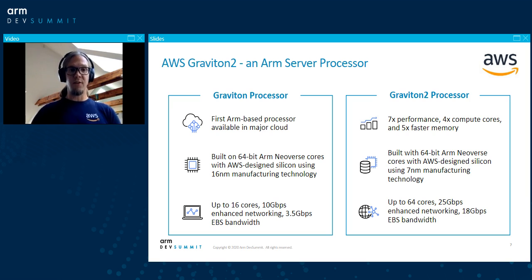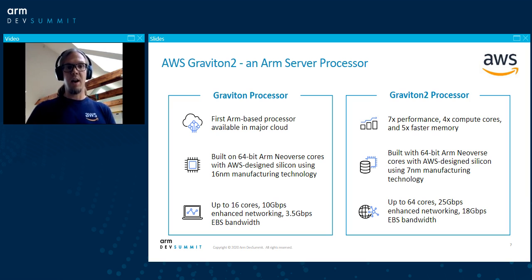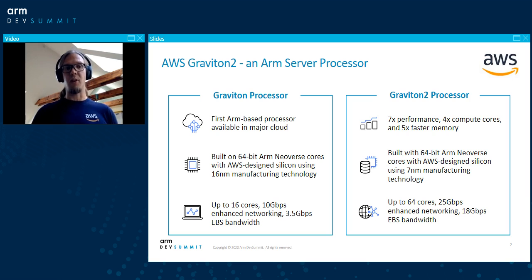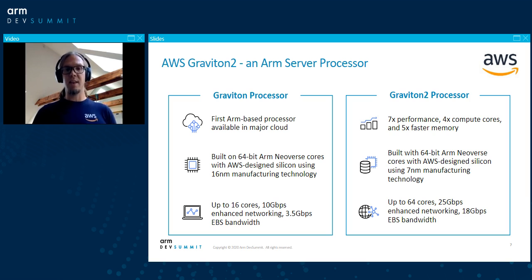These were our first-ever ARM server processors, built on top of the AWS Nitro system. This system offloads many traditional virtualization functions to dedicated hardware, delivering practically all of the compute and memory resources of the host hardware to your instances for better performance and scalability. These instances deliver significant cost savings over other general-purpose instances for scale-out workloads such as web servers, containerized microservices, or data and log processing — basically anything that can work with a small memory footprint. Not exactly HPC.